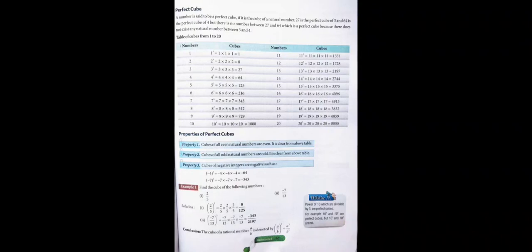Property 3: Cubes of negative integers are negative — when we find the cube of any negative integer, the result will also be negative. For example, cube of minus 7: we write minus 7 three times (−7 × −7 × −7), and our answer will be −343. Since 7 is an odd number, its cube 343 is also odd, and here we get −343.